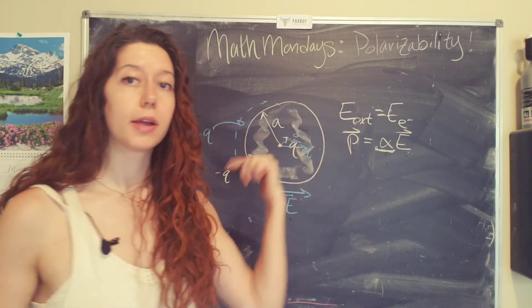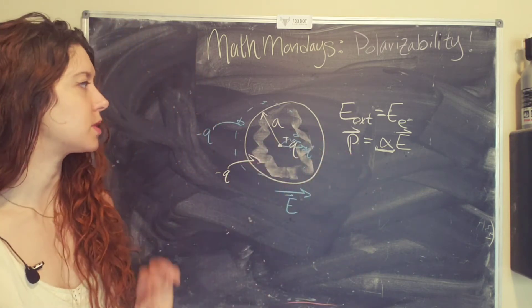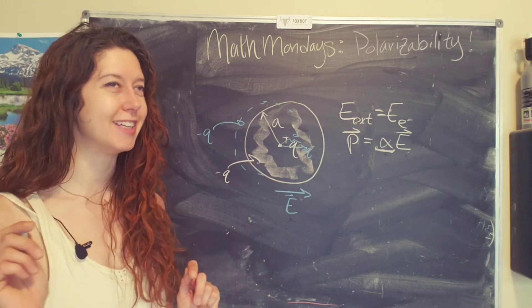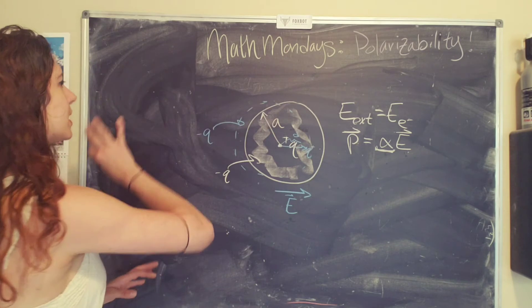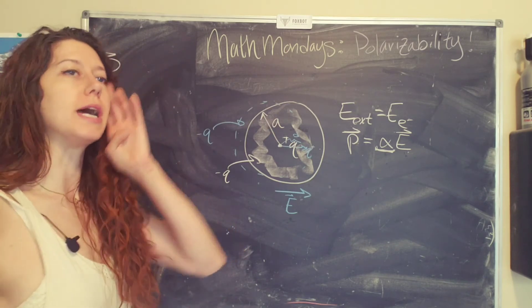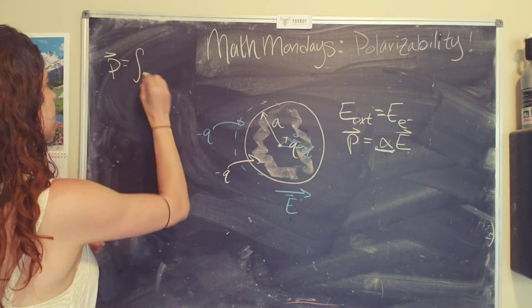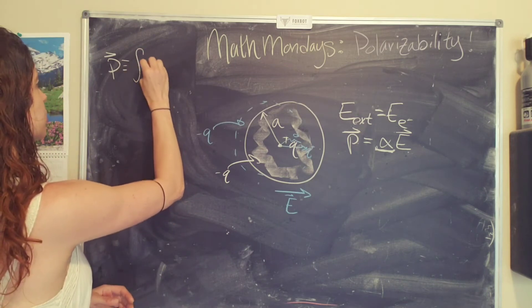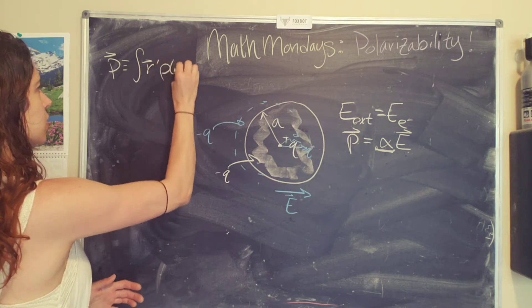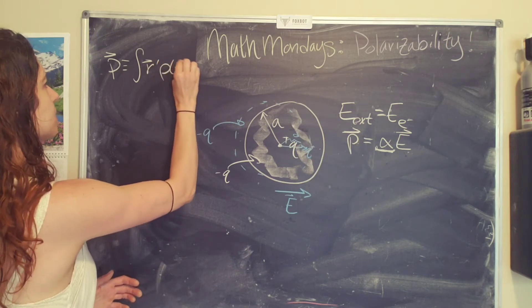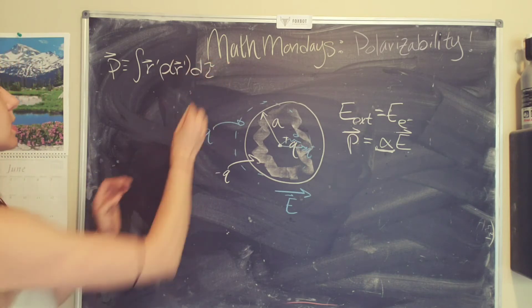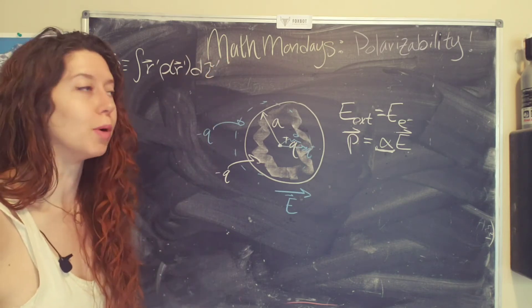I also want to kind of back up a sec here because we skipped a little bit of topics in electrodynamics. I'm not going to cover all of it. It's a pretty big field of study. So I do want to say that there is a more general equation for dipole moment, which is given by this. Like this is the definition of it. So you have the charge density, and then you, okay, so this is the equation, the definition for dipole moment.